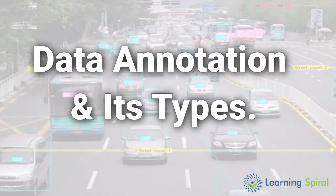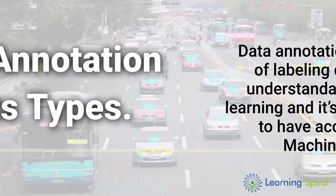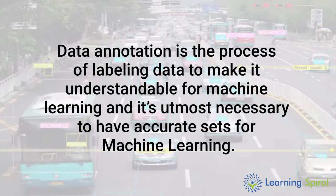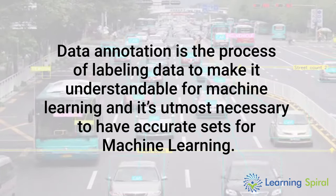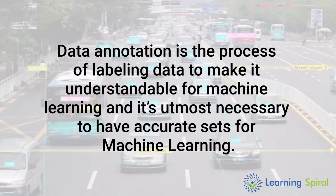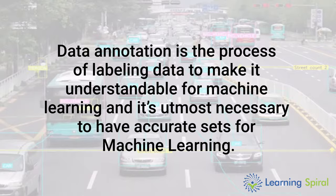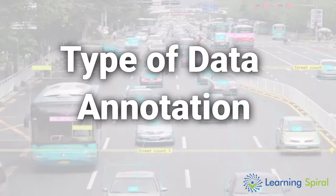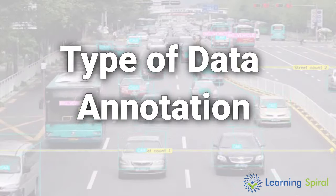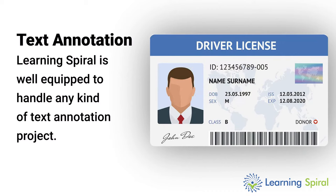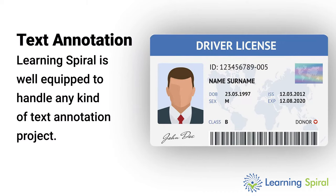Data annotation and its types. Data annotation is the process of labeling data to make it understandable for machine learning, and it is utmost necessary to have accurate sets for machine learning. Types of data annotation: text annotation. Learning Spiral is well equipped to handle any kind of text annotation project.